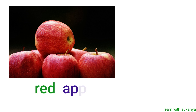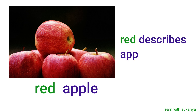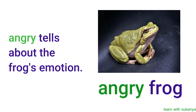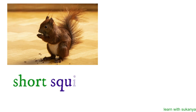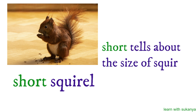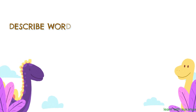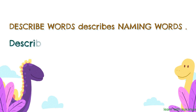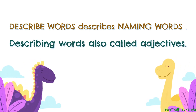Red apple — red tells about the color of the apple. Angry frog — angry tells about the frog's emotion. Short squirrel — short tells about the size of the squirrel. So, describing words describe naming words. Describing words are also called adjectives.